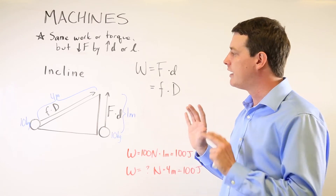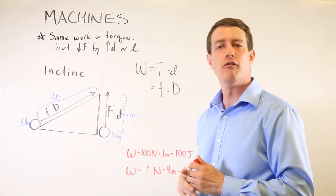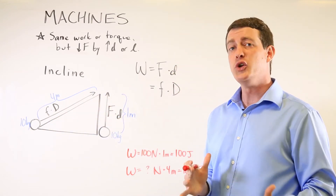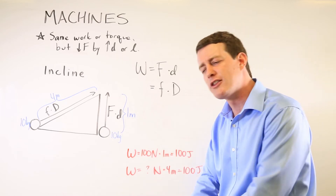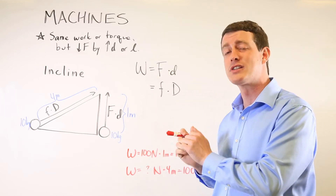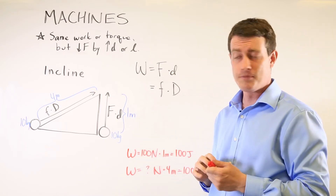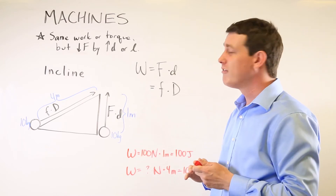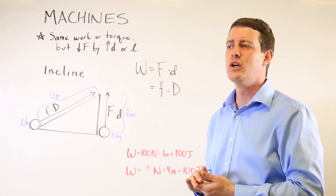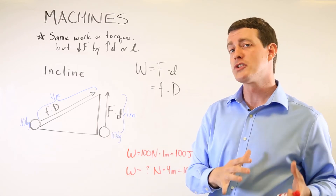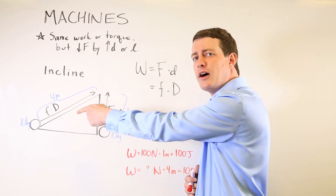That means you'll be applying a force of 25 newtons to lift the ball up the ramp, which is much easier on the person performing the work — pushing with 25 newtons rather than lifting with 100 newtons. Whenever you're trying to figure out how much of a mechanical advantage a machine gives you, or how much less force you have to use, you can look at the ratio of distances to figure that out.